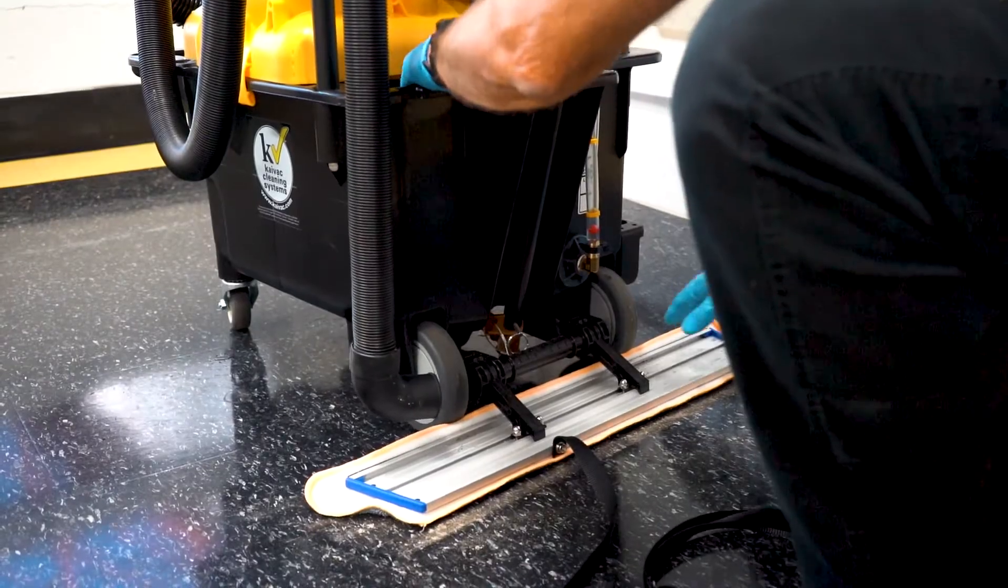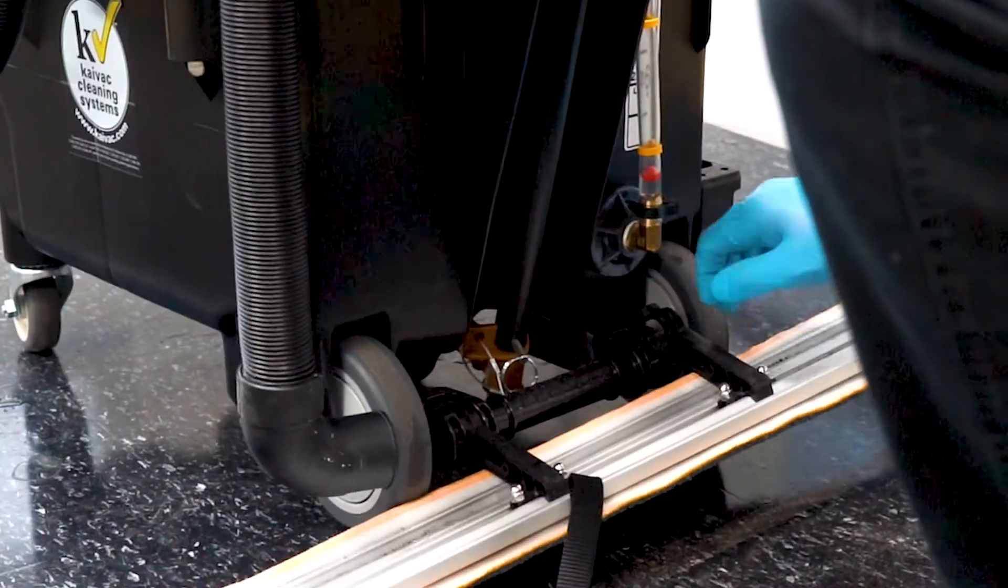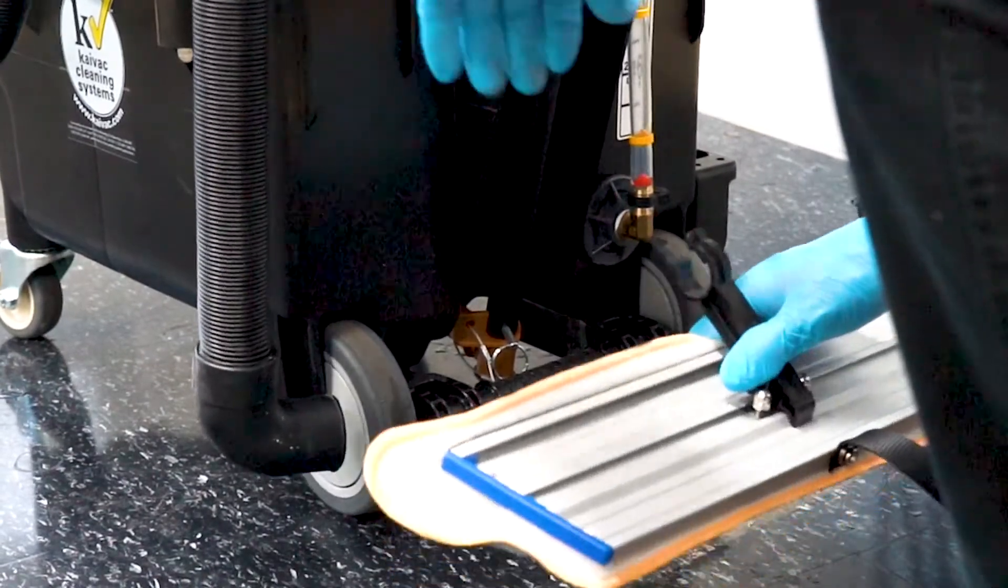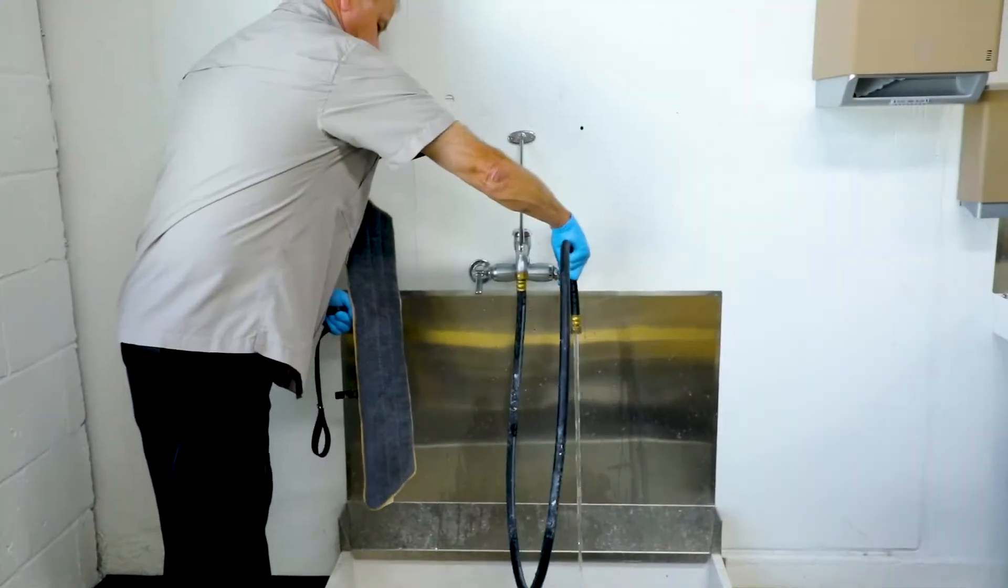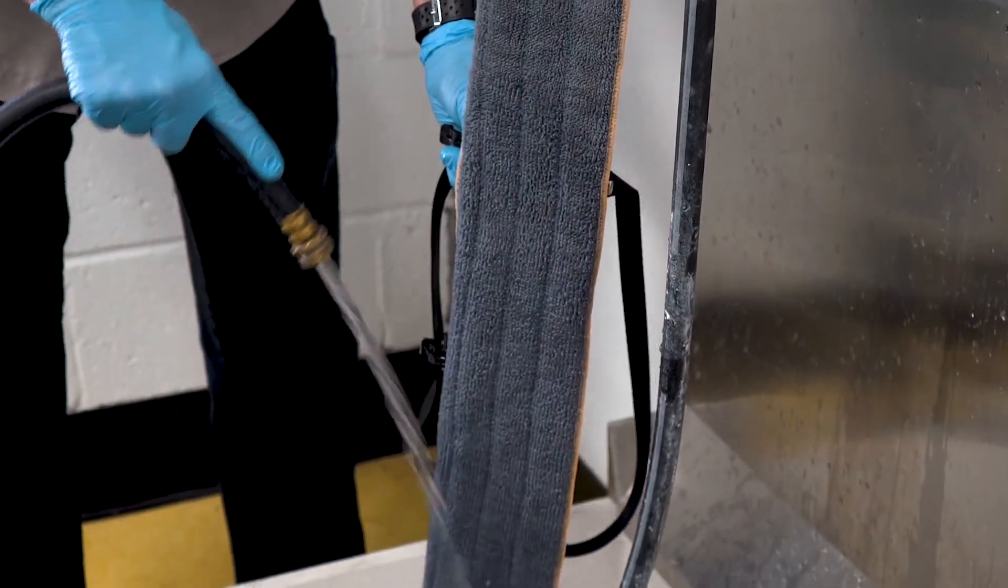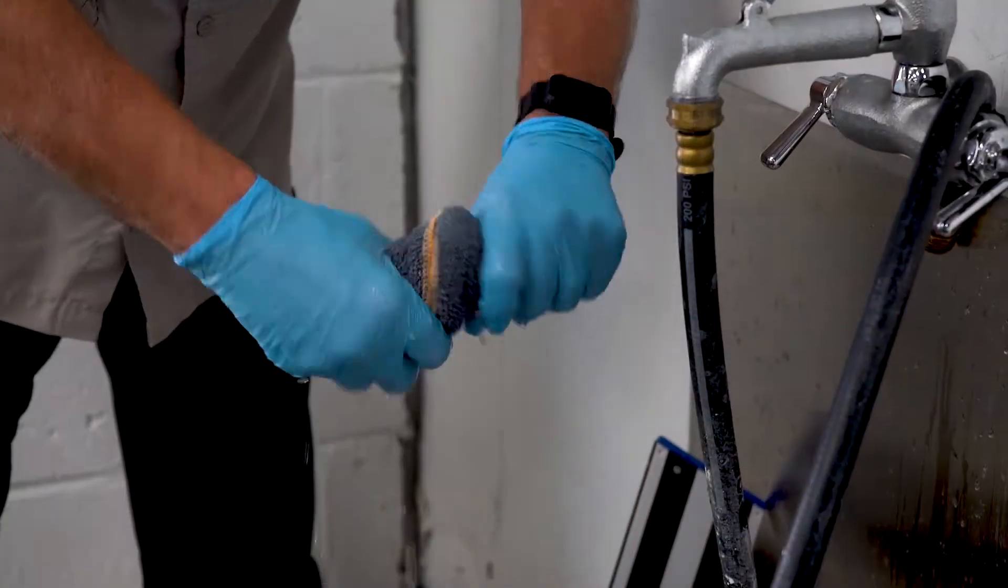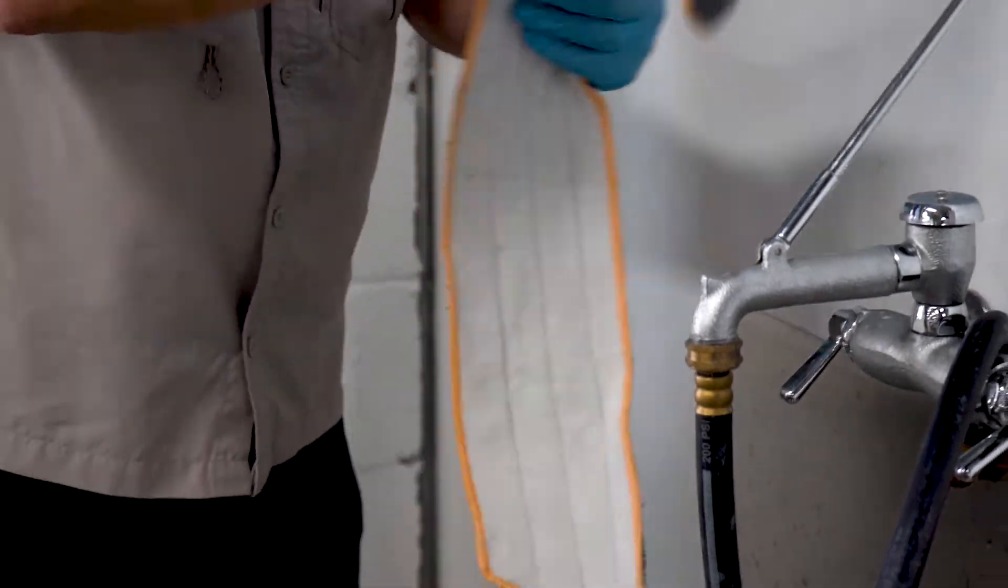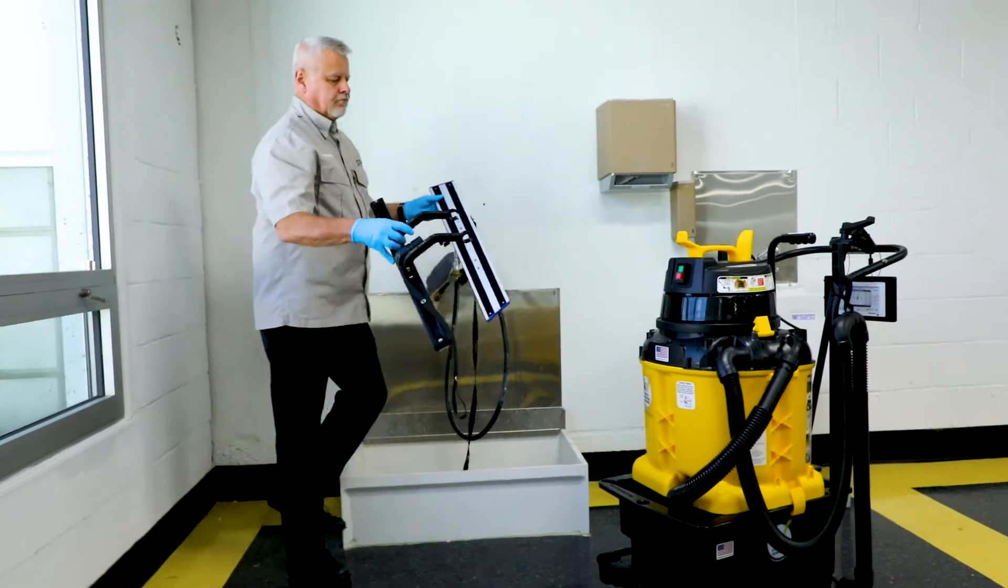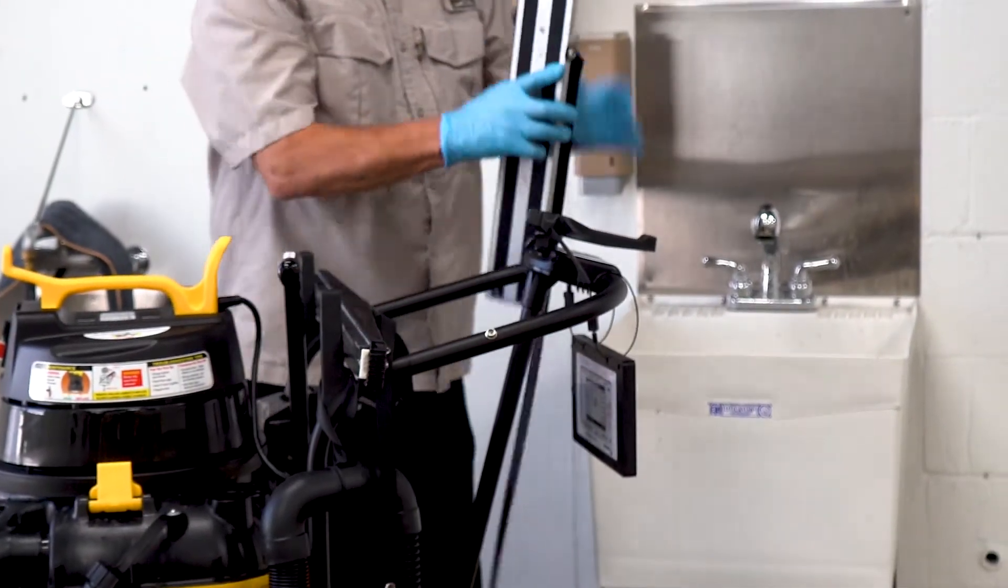Next, remove the spreader pad from the AutoVac hitch by pulling firmly on the pad frame arms until they detach from the hitch. Now use a hose to rinse and wring out accumulated soil from the pad. Then set the clean pad aside to dry. The spreader pad frame and squeegee head can be placed on the system's push handle for storage when the system is not in use.